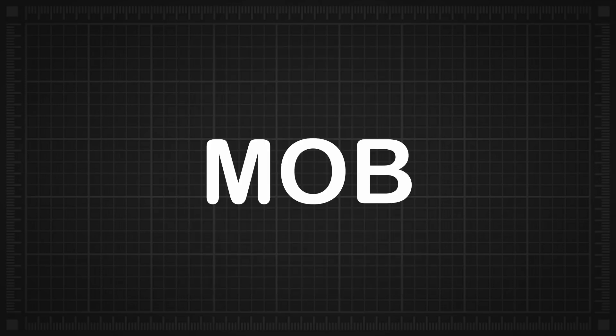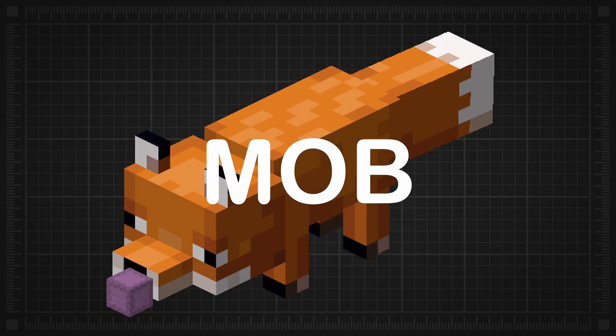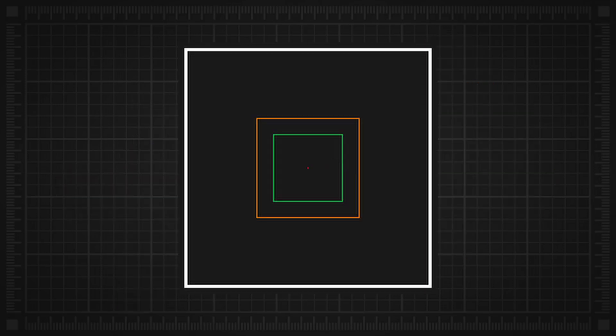In addition, if a mob like a fox holds a shulker with high NBT data on a Spigot/PaperMC server, then it will kick you within a range of 48 blocks.